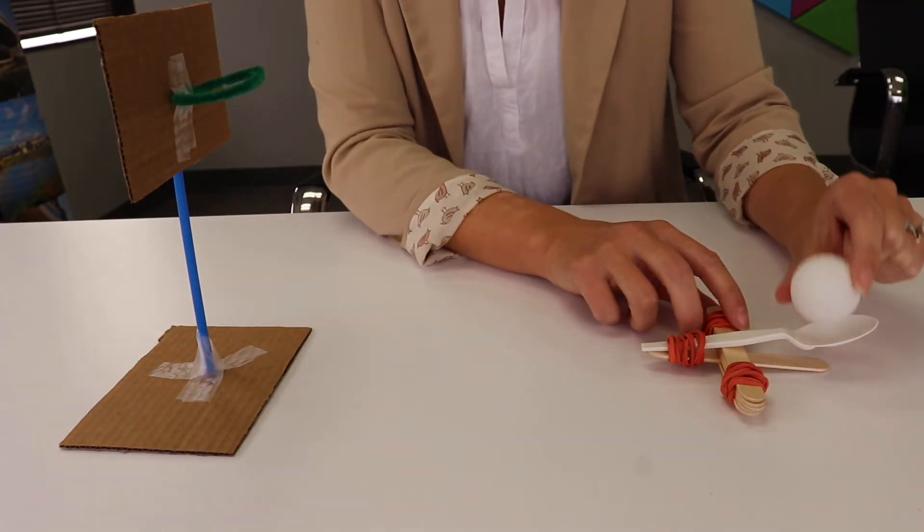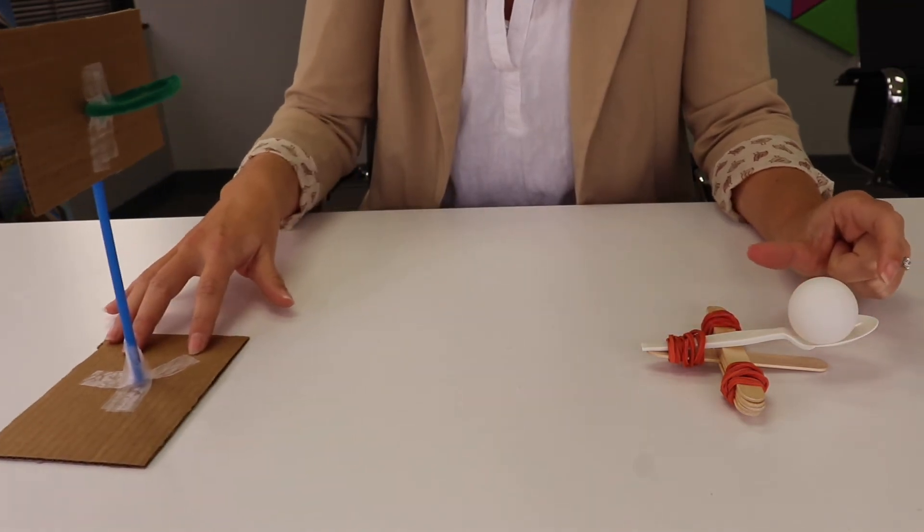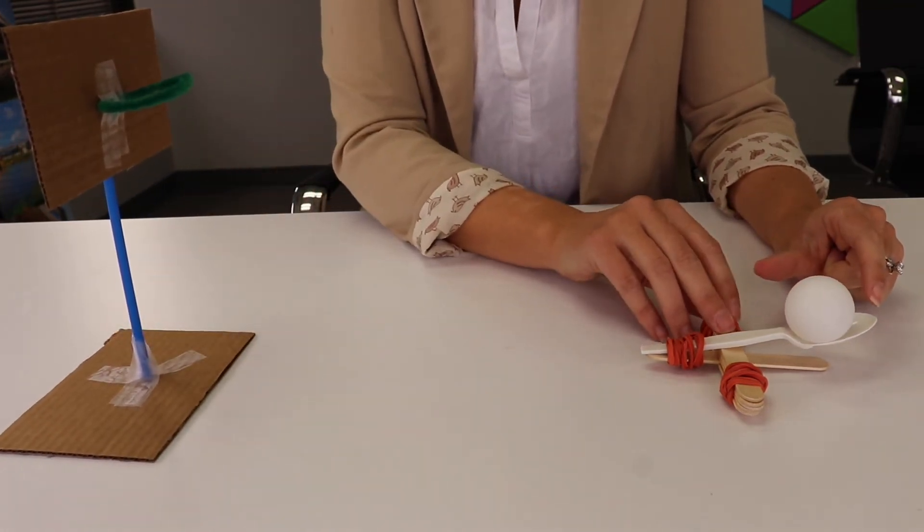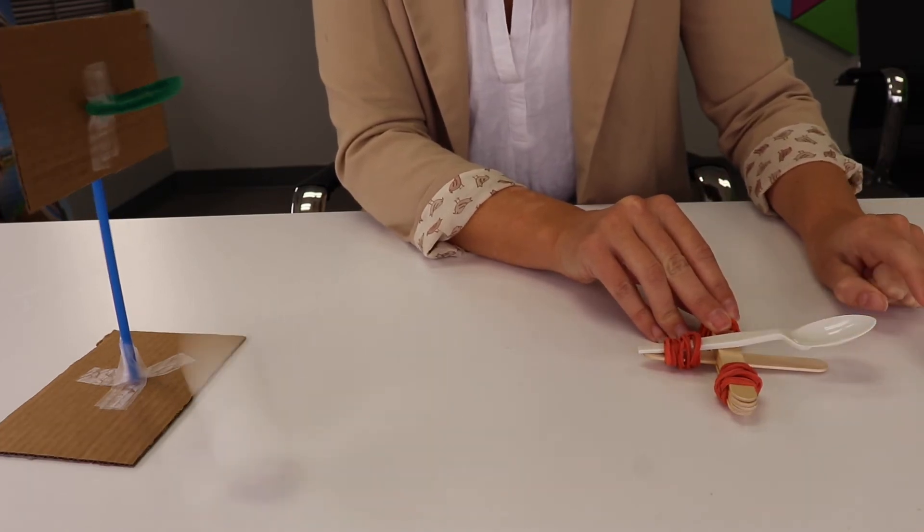Using the catapult, place the ping pong ball in the spoon. Set the hoop on the table some distance away. Hold down the five sticks, press on the back end of the spoon, and let go.